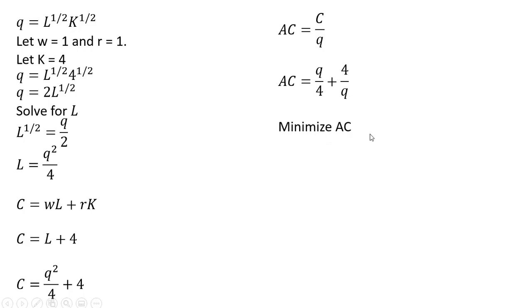Let's minimize this average cost equation to find where per unit costs are minimized. So we take the derivative of average cost with respect to output. And we get back the following result. The Q divided by 4, the derivative of that is just 1 fourth. And then 4 divided by Q, using the quotient rule, we get back minus 4 divided by Q squared. We're setting this equal to 0. We want to find where the slope of average cost is 0. That will be at the bottom of the average cost curve.